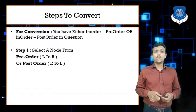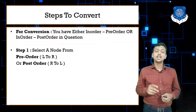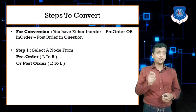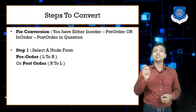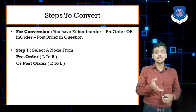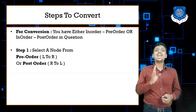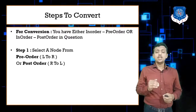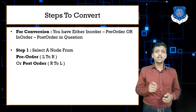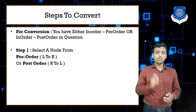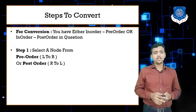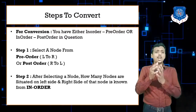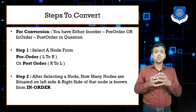You can select a root node from either pre-order or post-order traversals. Remember: post-order is LRV (left, right, visit) and pre-order is VLR (visit, left, right). So when selecting a node, go from left to right in pre-order, and from right to left in post-order.